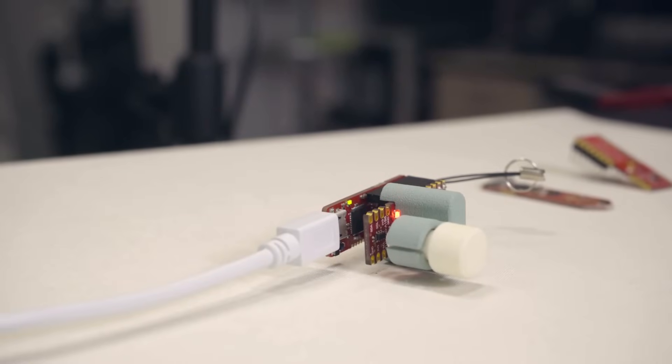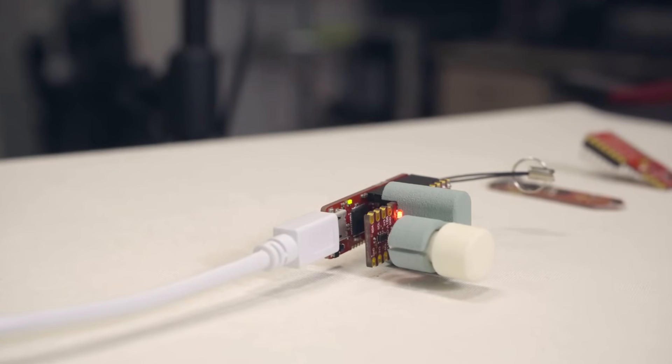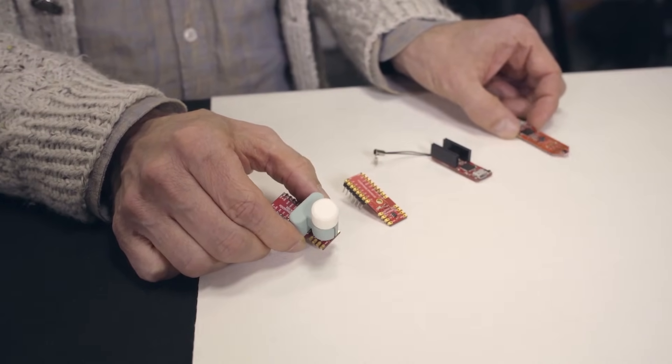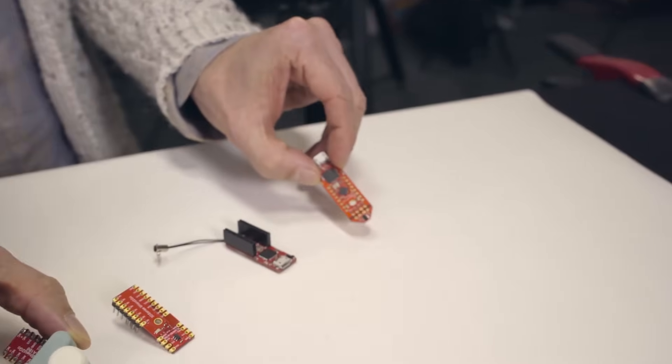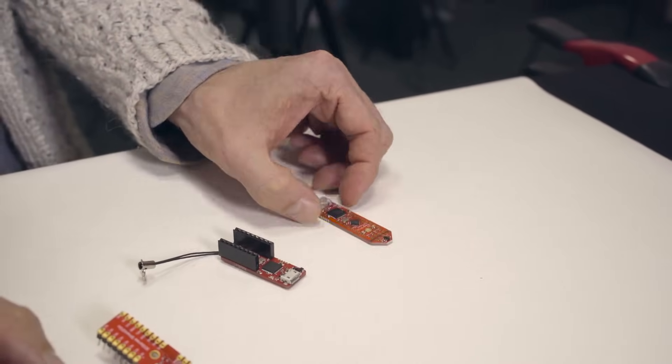Thanks Tobias for the handover. Now I want to explain you the difference between the Arduino shield. The basic idea is that you can easily evaluate the magnetic 3D sensors. Therefore we have the 3D kit with the sensor, the microcontroller, and the USB connector, and here the standalone sensor.